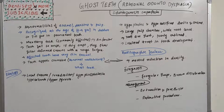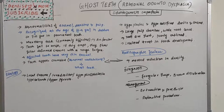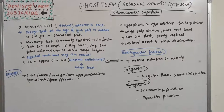Hello everyone, welcome back to a new session on dentistry and more. Today's topic is ghost teeth — regional odontodysplasia, also known as odontogenesis imperfecta. It comes under third year oral pathology and also first year dental histology, alongside amelogenesis imperfecta and dentinogenesis imperfecta. The first affects enamel, dentinogenesis imperfecta affects dentine, and this condition affects both enamel and dentine.